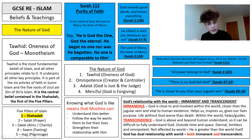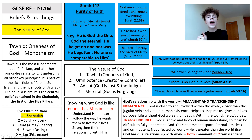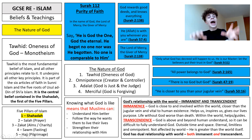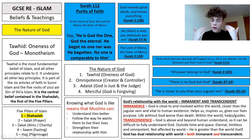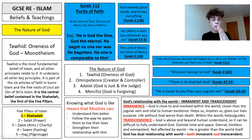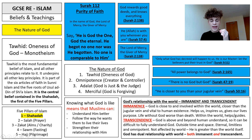God has moments of intervention — for example, the revelation of the Quran to Muhammad via Angel Jibril. So Muslims believe God has a dual relationship with the world: he is both immanent within it and transcendent, outside and above it. That dual relationship is really important. The Shahada — 'there is no God but God and Muhammad is his messenger' — is the foundation of Islam.